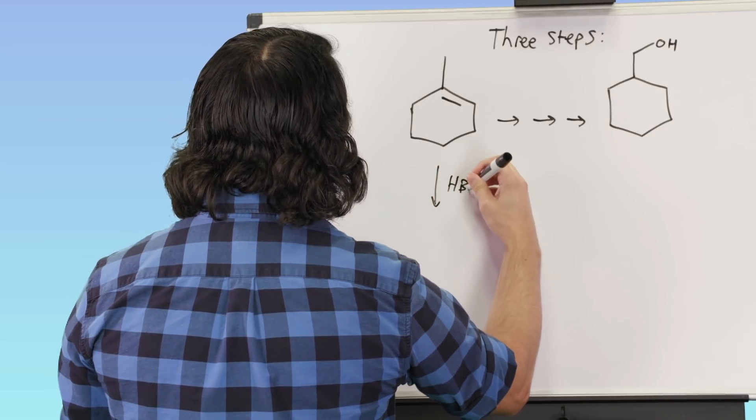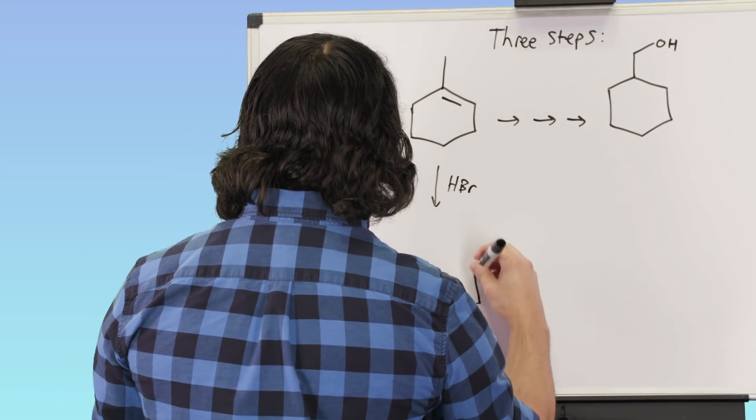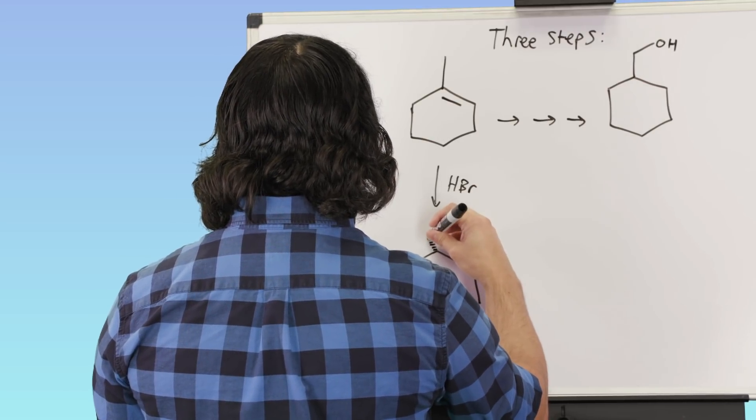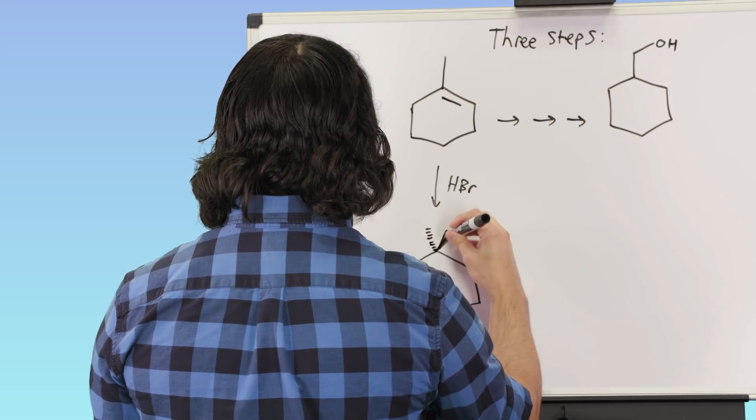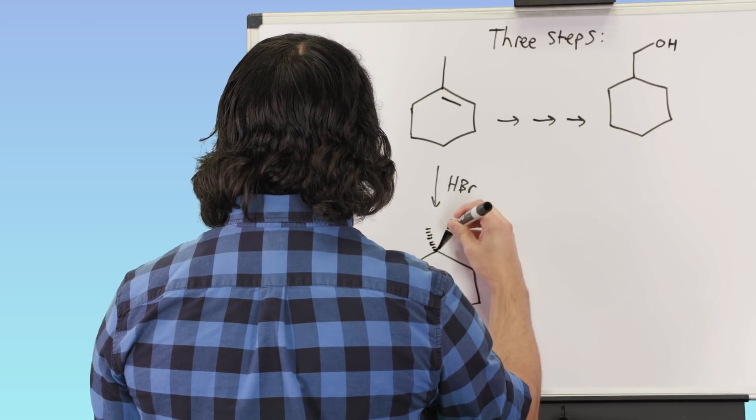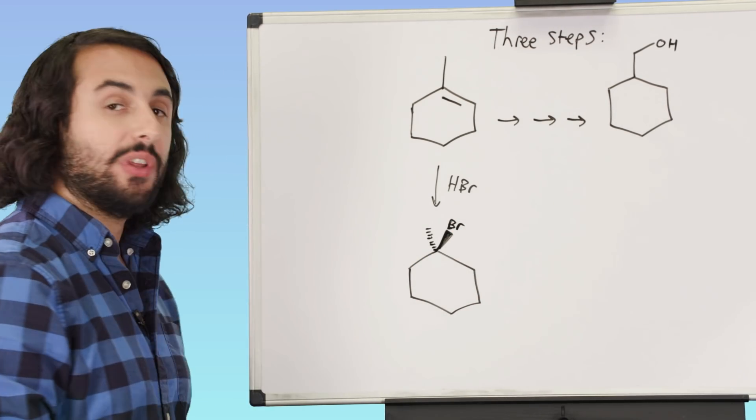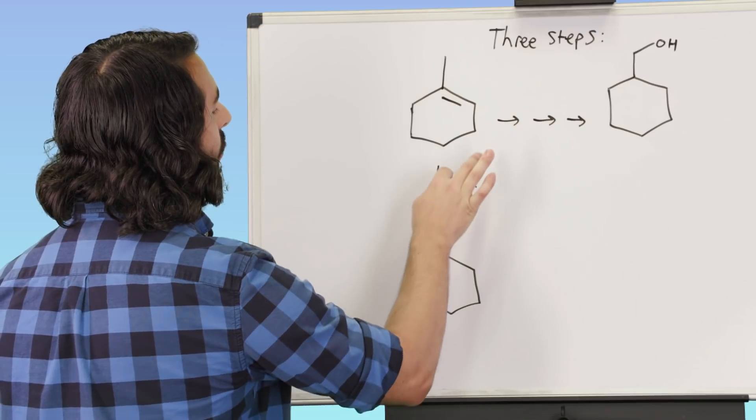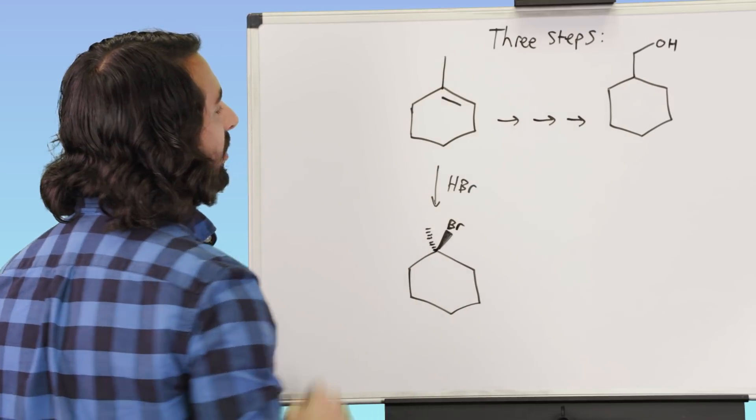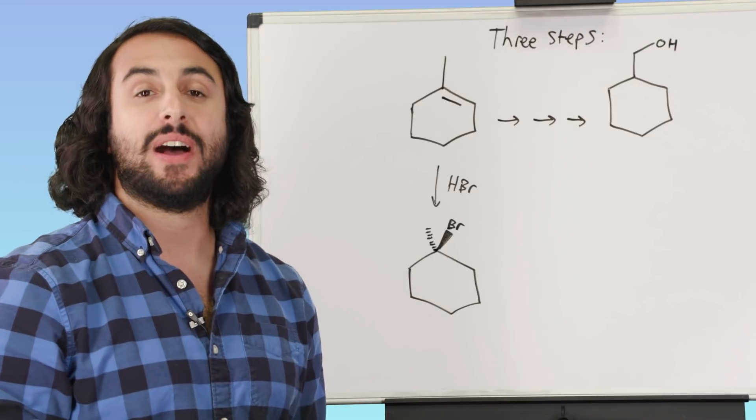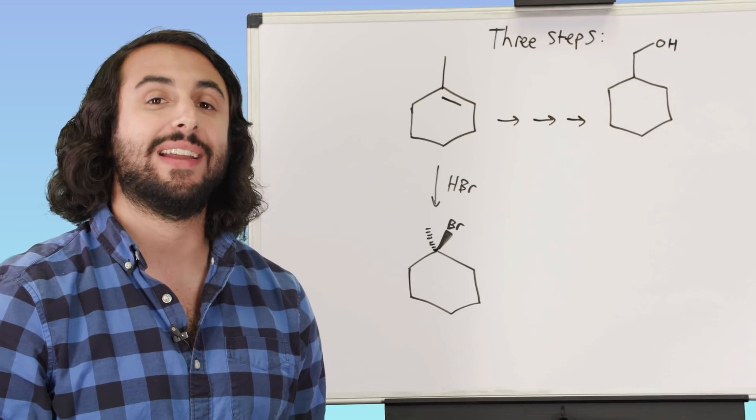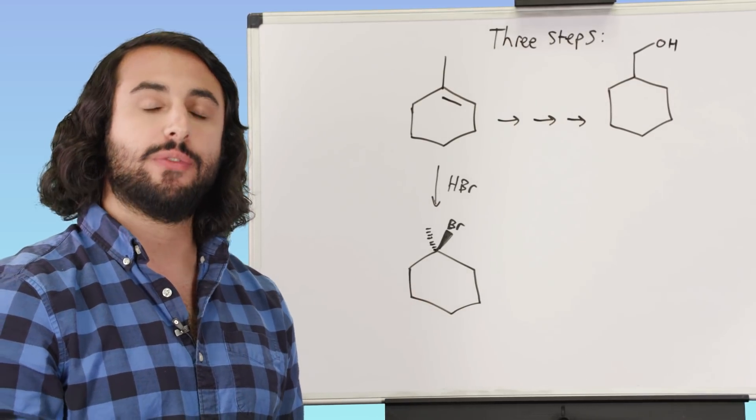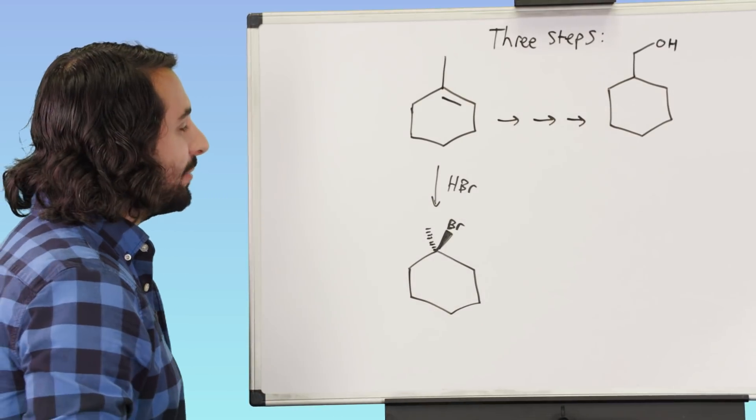Because if we do that, that's going to set us up for continuing to move the functionality in that direction. So let's say we do that and we get this situation here. Okay, so we've done a Markovnikov hydrohalogenation and we've added H and Br, and the Br went to the more substituted carbon participating in that double bond, again because of the carbocation intermediate. We're going to proceed via the more stable carbocation intermediate.